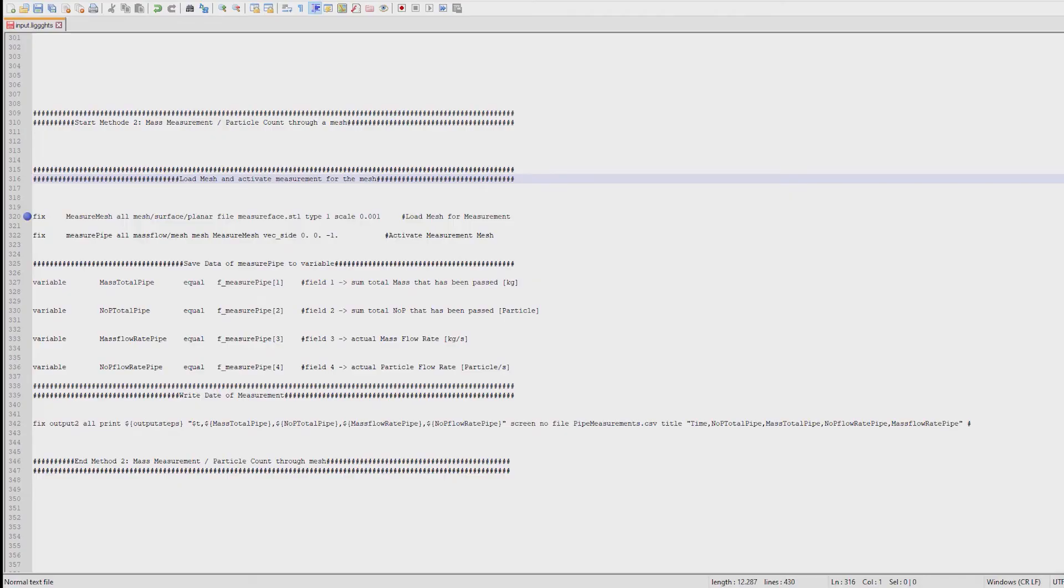The first FIX command, measure mesh, loads the STL file named measure mesh. The FIX measure pipe activates the measurement using the measure mesh as mesh. Next we define the variables to save the data from the FIX measure pipe like shown before.